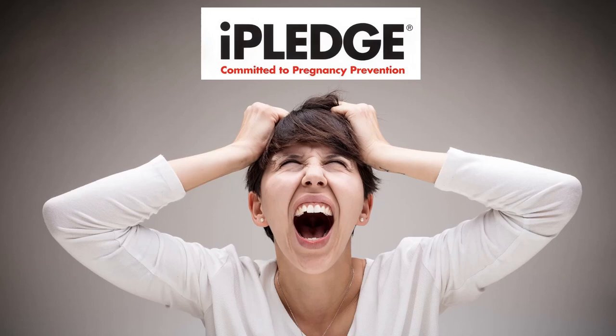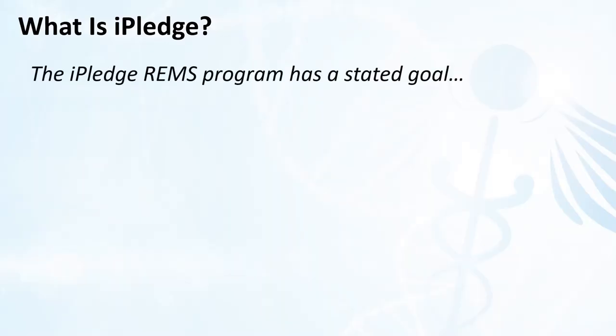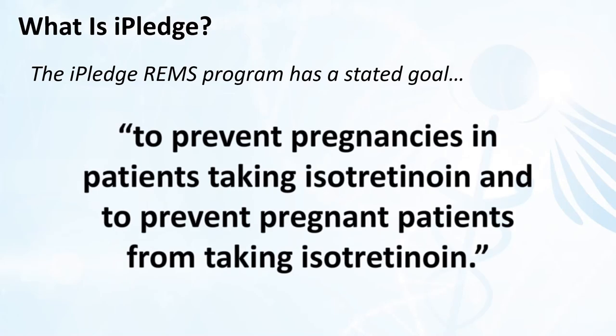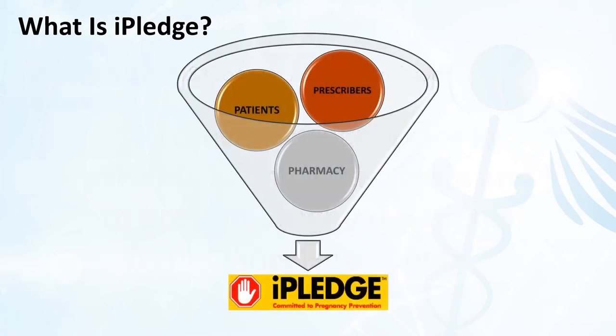The iPledge program has defined its goal as being to prevent pregnancies in patients taking isotretinoin, and to prevent pregnant patients from taking isotretinoin. Isotretinoin is the generic name for the active ingredient. Originally, Accutane was the only name brand, so some will still refer to isotretinoin as Accutane. Technically speaking, there are now quite a few brands available. In order to fill any given prescription of isotretinoin, everyone involved — the prescribers, the patients, and the pharmacy — must all participate in the iPledge program, and certain obligations must be fulfilled.